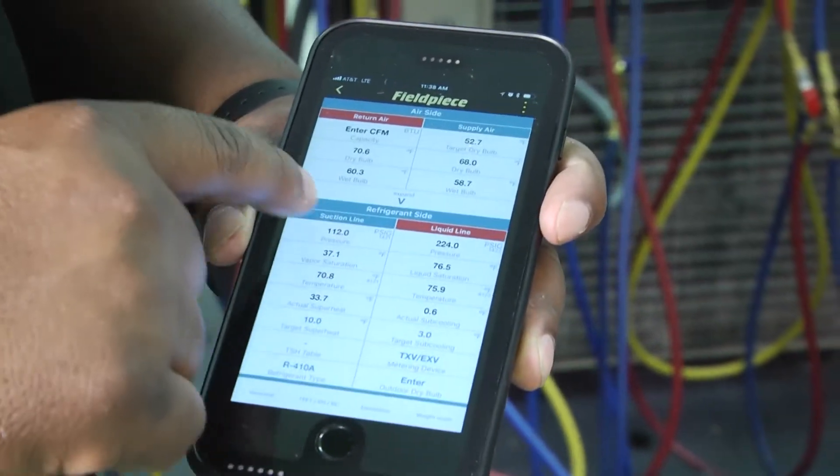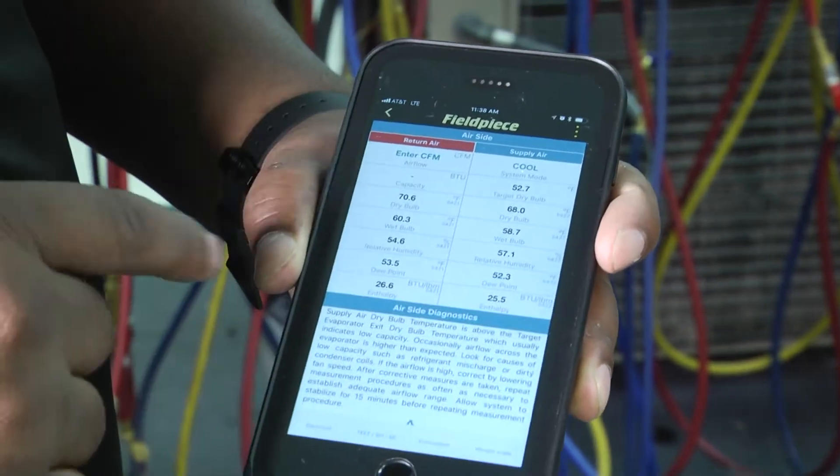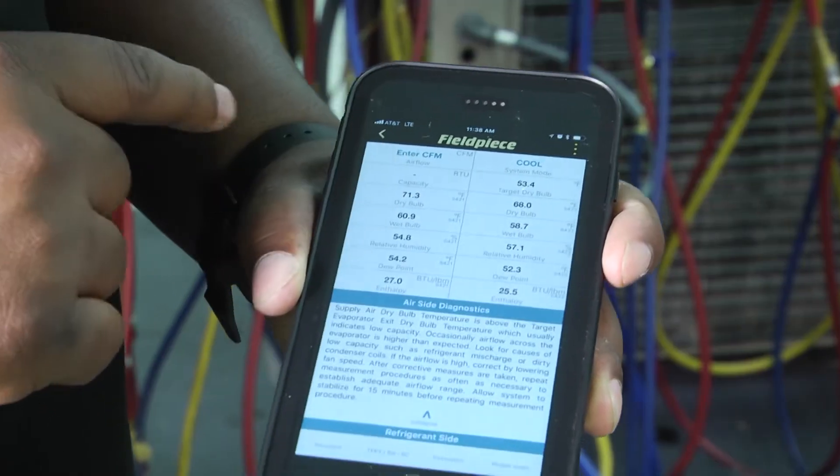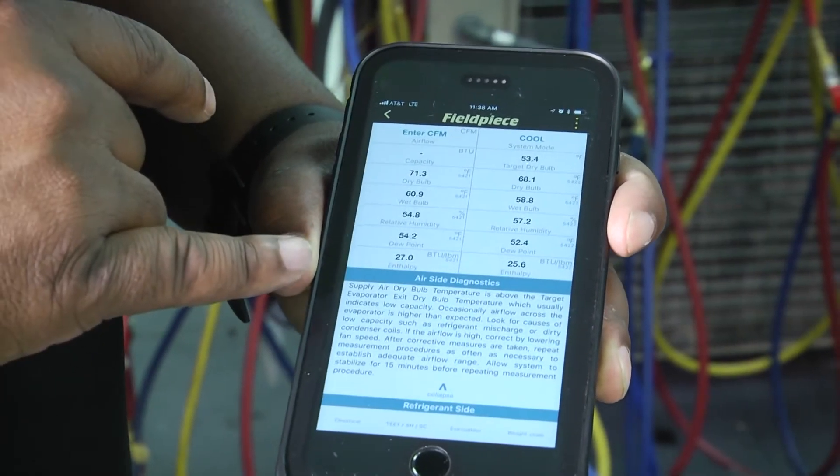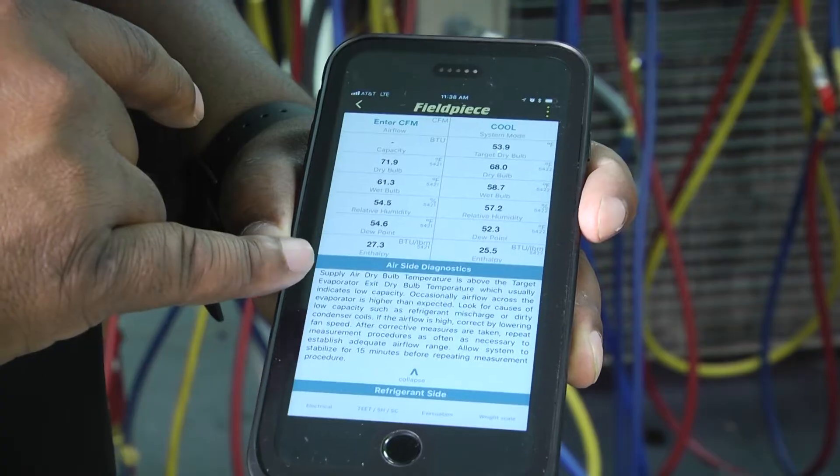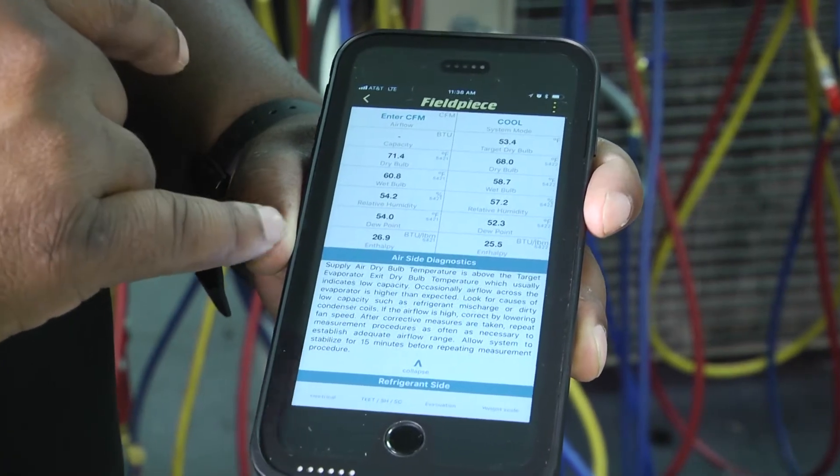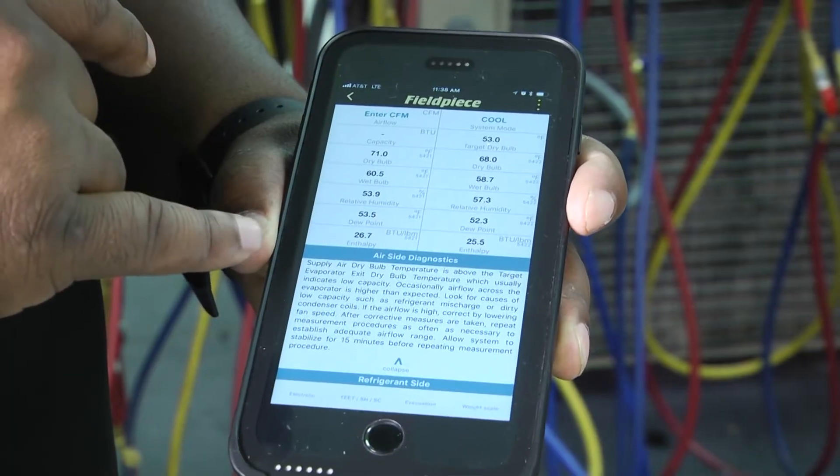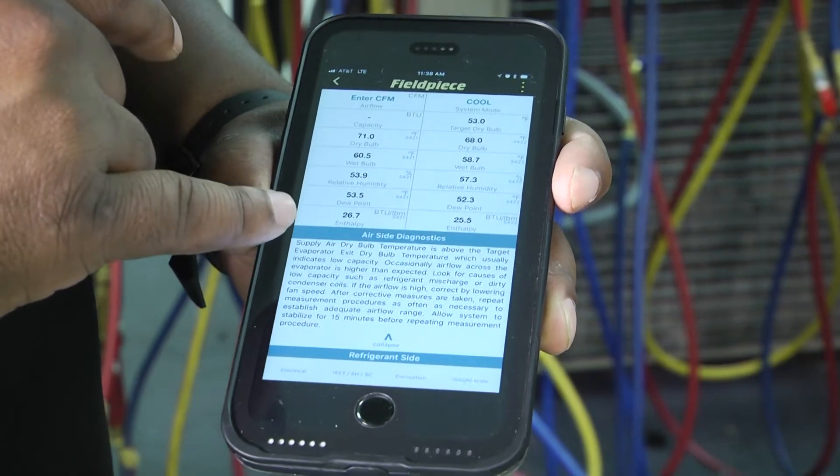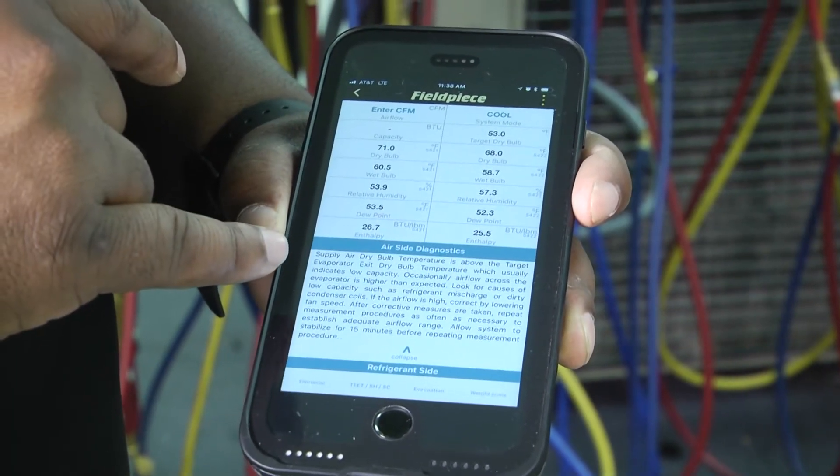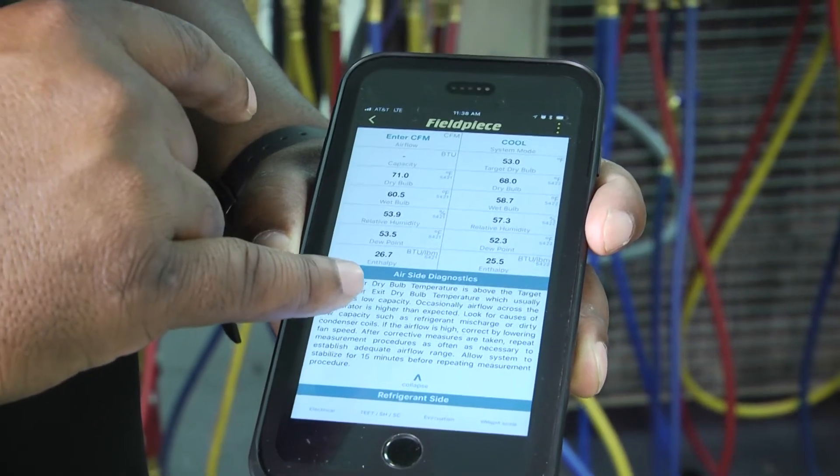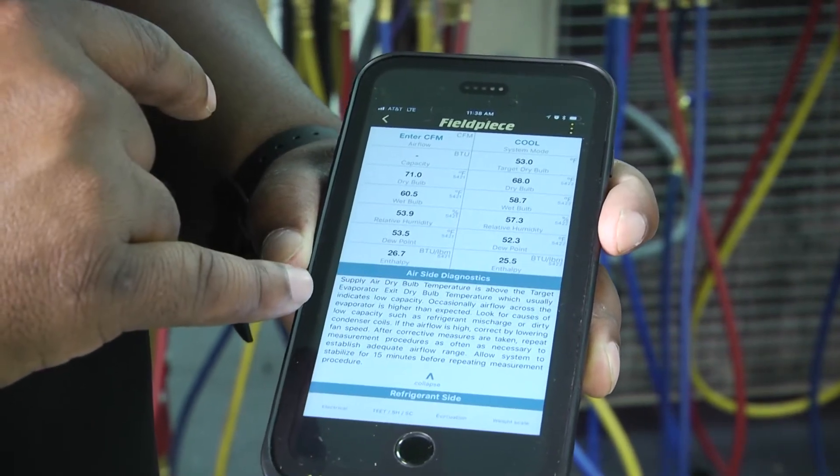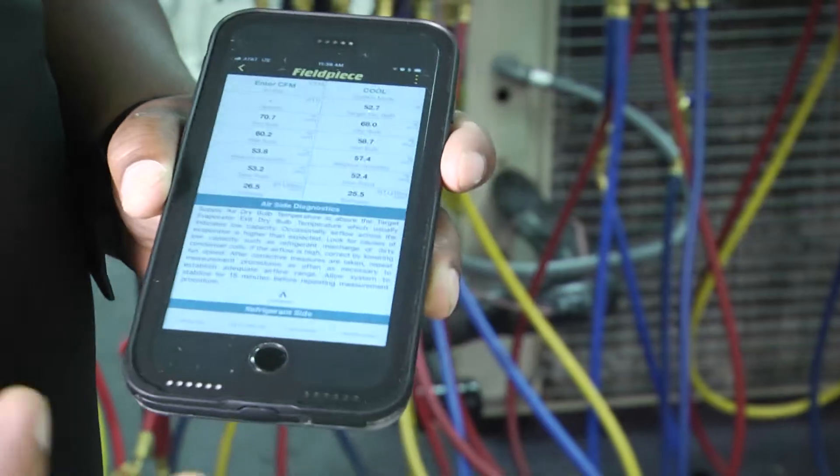Go up here at the top. And if we expand this, it'll give us a diagnostic report on our airflow. Supply air dry bulb temperature is above target evaporator exit dry bulb temperature, which usually indicates low capacity. Occasionally airflow across the evaporator is higher than expected. Look for causes of low capacity, such as refrigerant mischarge or dirty condenser coils.